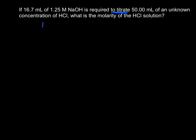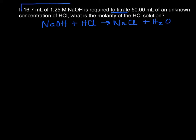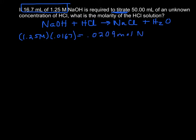Before we can do anything, we need to write a balanced equation. NaOH and HCl are going to make NaCl — just double replacement — and water. As it turns out, it's all 1 to 1 to 1, so the mole ratios will be pretty simple. Every time we see the volume and the molarity, we can calculate the moles: 1.25 molar times 0.0167 liters gives us 0.0209 moles of NaOH. Then we do our mole ratio — it's 1 to 1 — so we have the same number of moles of HCl. It won't always be 1 to 1, so you have to have a balanced equation.